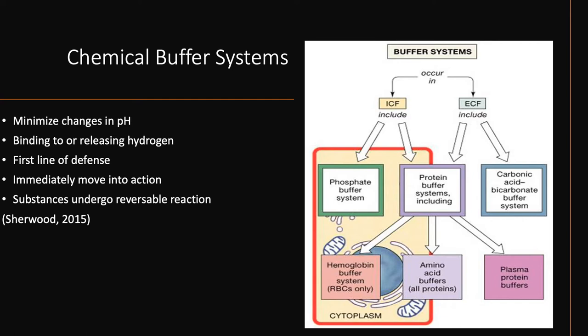We can see this by looking at an important buffer reaction known as the carbonic acid-bicarbonate pair. This is the buffer system that consists of a weak acid and its conjugate base. The carbonic acid-bicarbonate buffer system consists of carbonic acid, a weak acid, and the bicarbonate ion as its conjugate base. When hydrogen ions in the body become too low, carbonic acid undergoes a chemical reaction in which it loses or donates one of its hydrogens and transforms into bicarbonate. When the hydrogen concentration becomes too high, bicarbonate is able to bind to the extra hydrogen ions, forming carbonic acid.